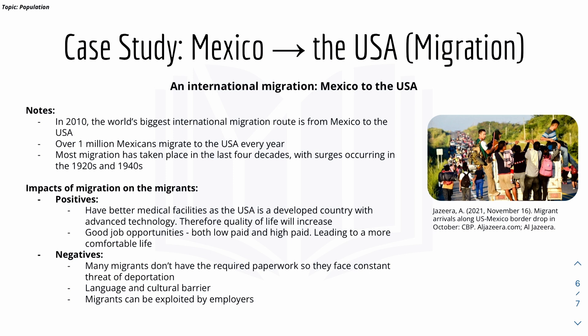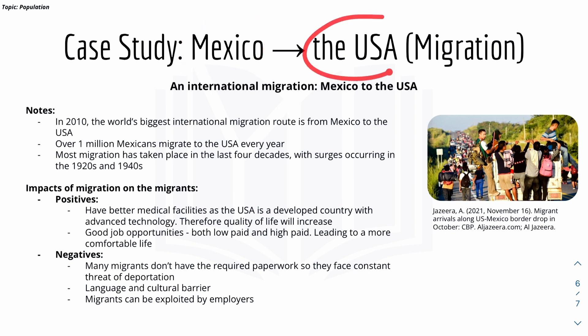Here's a case study on international migration: Mexico to the USA. In 2010, the world's biggest international migration route was from Mexico to the USA, with over 1 million Mexicans migrating every year. Positive impacts on migrants include better medical facilities and better job opportunities. However, migrants may lack required paperwork, facing constant threat of deportation. There may also be a language or cultural barrier, as Mexico speaks Spanish and the USA speaks English, and migrants can be exploited by employers.